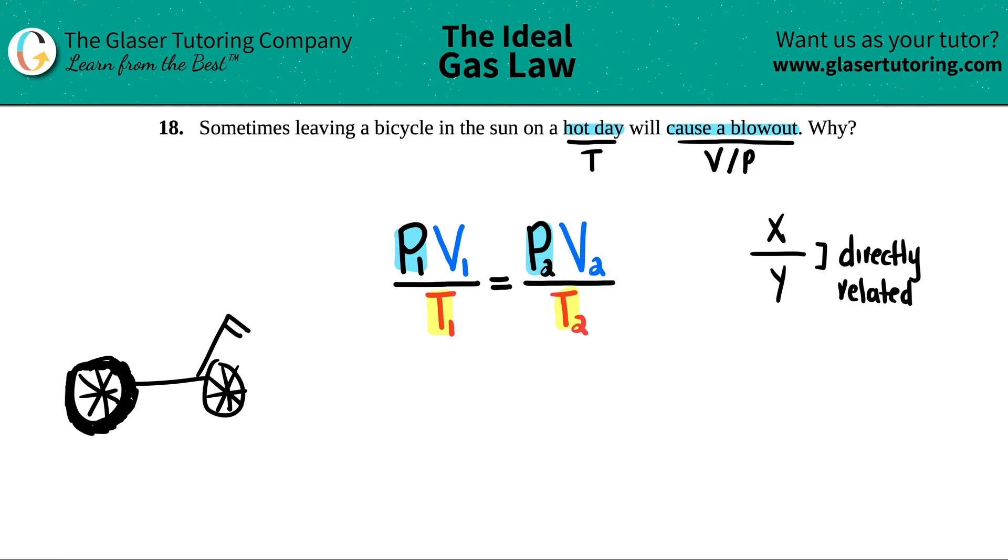Anytime that you see a variable on the top and another variable on the bottom, this is always directly related. So this is a direct relationship. Anytime that you see a variable times by a variable, such as P times by V, that is indirectly related.